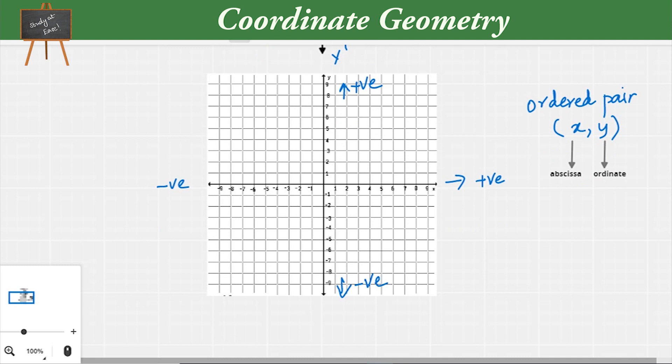So what will be the ordered pair at the origin? It is (0, 0). The x value and the y value will be 0 at the origin. This is how you represent it.